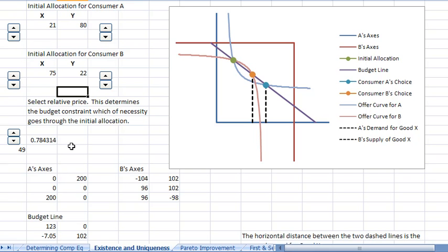So low relative price, positive excess demand; high relative price, negative excess demand. There will be an equilibrium as long as the offer curves are continuous.